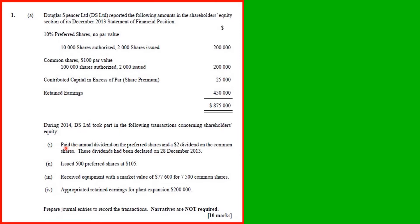The first transaction: pay the annual dividend on the preferred shares and the $2 dividend on the common shares. These dividends have been declared on 28 December 2013. So they were declared the year before, and now they have been paid. They should have been in a dividend payable account.